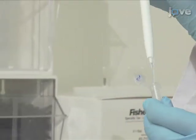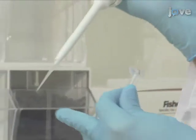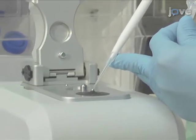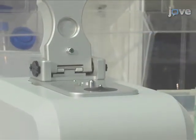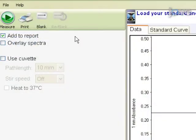Establish the reference by pipetting a 2 µL aliquot of only working reagent and buffer, with no protein, onto the lower pedestal. Lower the arm and click Measure.